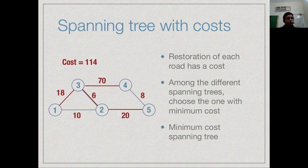So it would incur a cost of 114 to restore this spanning tree. On the other hand, if the government chose this green spanning tree, the cost reduces to 10 plus 6 is 16, plus 20 is 36, plus 8 is 44. So different spanning trees will come with different costs and the goal would be to reduce the cost to the minimum. In this example, this green tree with cost 44 is actually the minimum cost spanning tree on this graph.